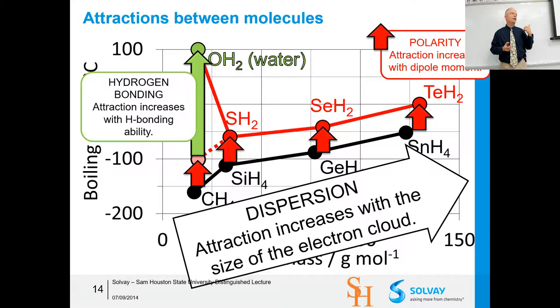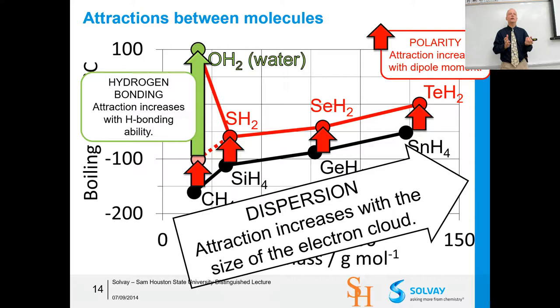There are three types of interactions we can track: dispersion — based on the number of electrons in the molecule; polarity — for asymmetric molecules; and hydrogen bonding — for molecules like water. Others have called the dispersion forces London dispersion forces or van der Waals interactions — all captured in the same category. So in Hansen solubility parameters, d is dispersion, p is polarity, and h is hydrogen bonding.